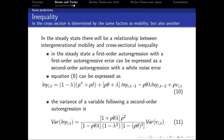Becker and Tomes also show us that inequality in cross-section is determined by the same factors as mobility, but also by another. In the steady state, there's a relationship between intergenerational mobility and cross-sectional inequality. This can be expressed in a long equation where the variance of the noise in the endowment gets passed on to the variance of income, according to the parameters rho, theta, and lambda that we've discussed.